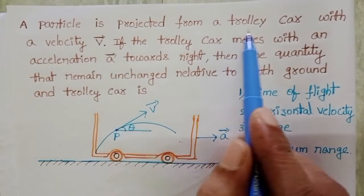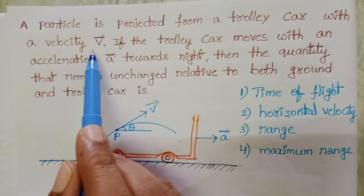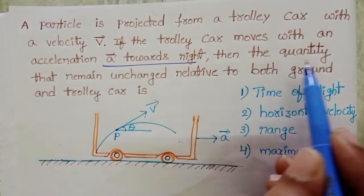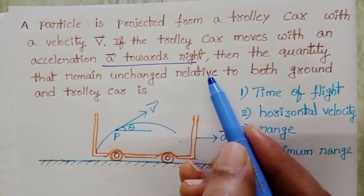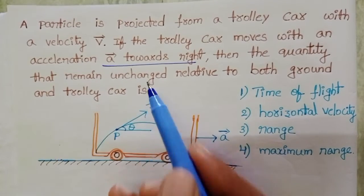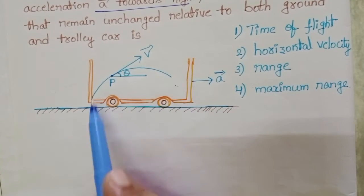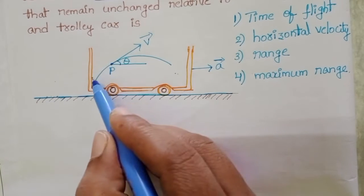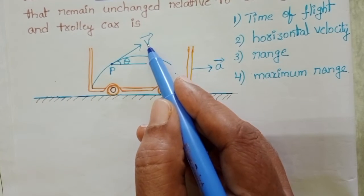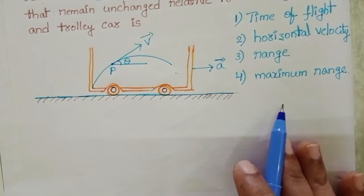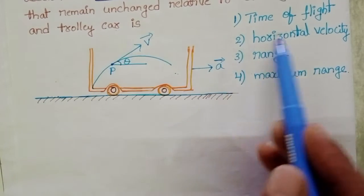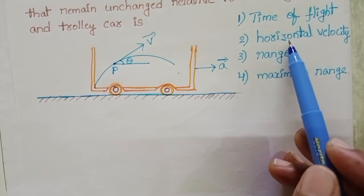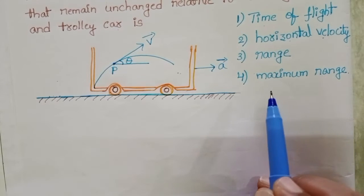A particle is projected from a trolley with a velocity v. If the trolley moves with an acceleration a towards the right, then the quantity that remains unchanged relative to both ground and trolley is — time of flight, horizontal velocity, range, or maximum range?